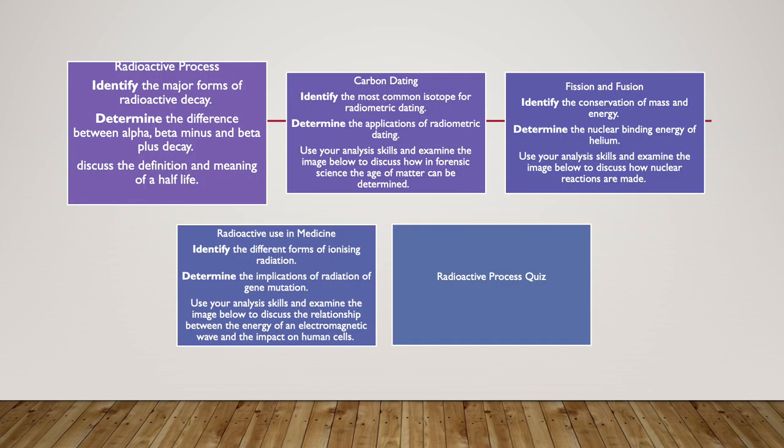On Sunday we will be learning about radioactive process. Through that lesson we will be able to identify the major forms of radioactive decay. We will determine the difference between alpha, beta minus and beta plus particles. We will also discuss the definition and meaning of half-life and relate it to what we previously learned.